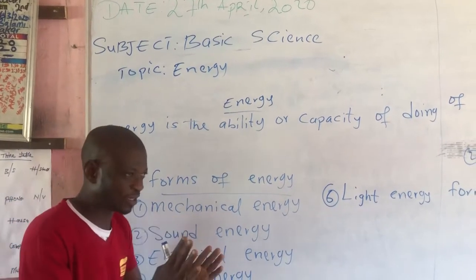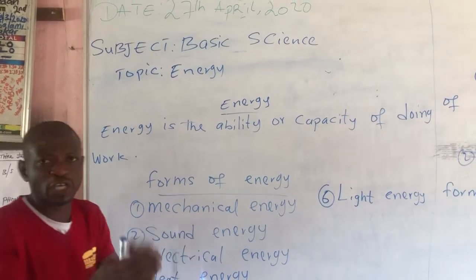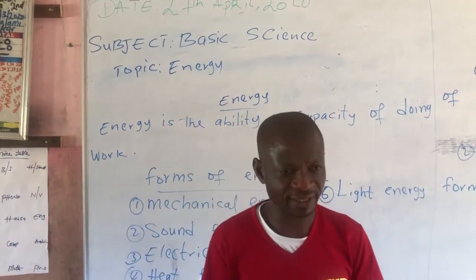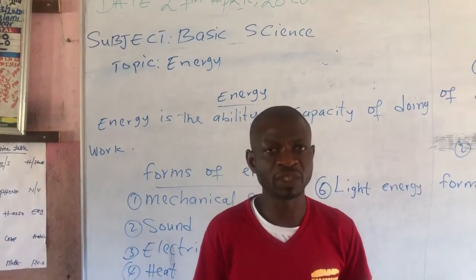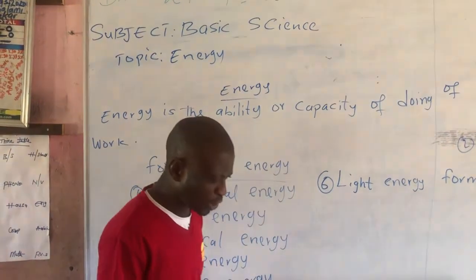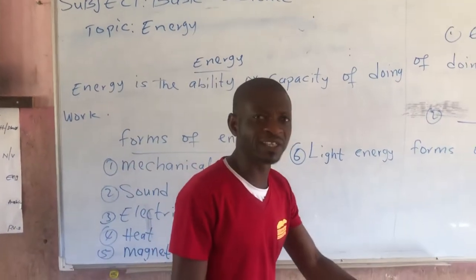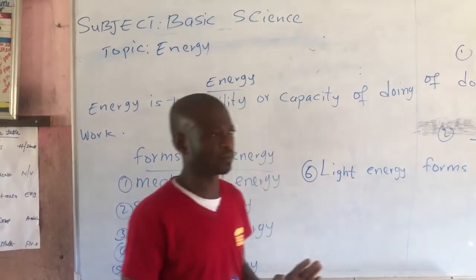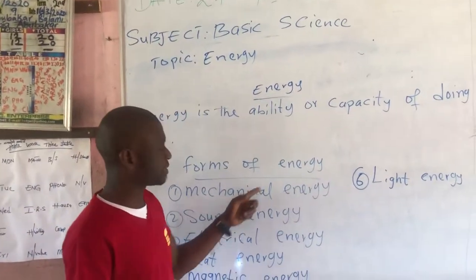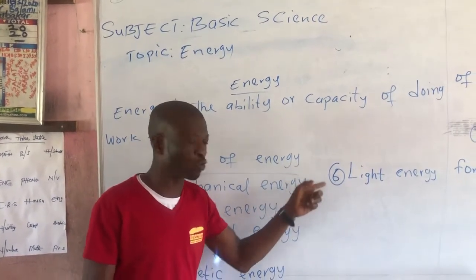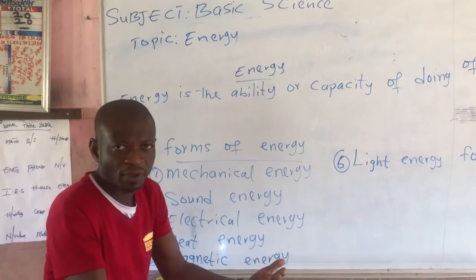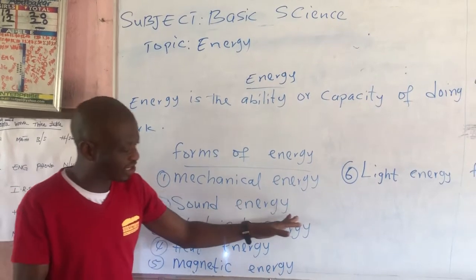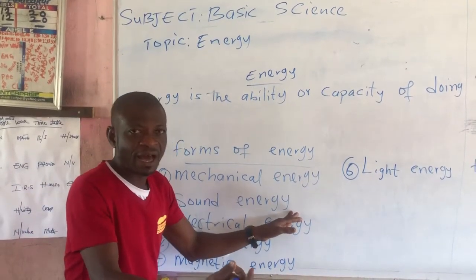Energy possessed due to its position is potential energy. When a body is standing still, that is potential energy. But when the body is moving, that is kinetic energy. So mechanical energy is energy possessed by a body due to its position, shape, or movement.